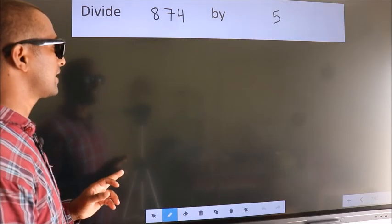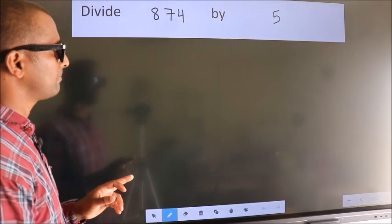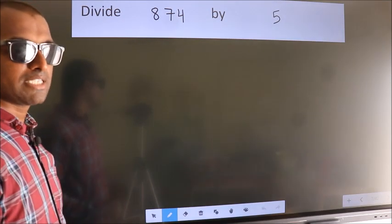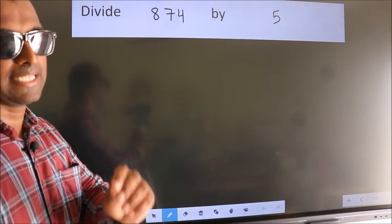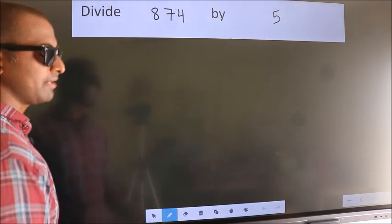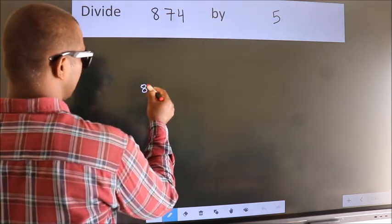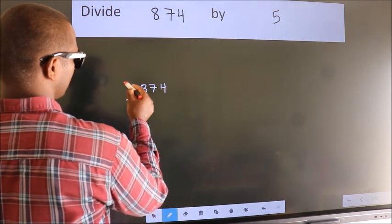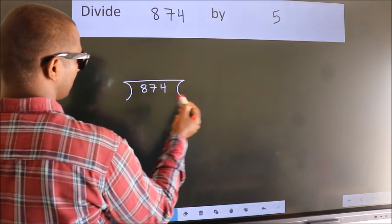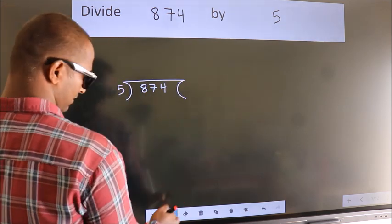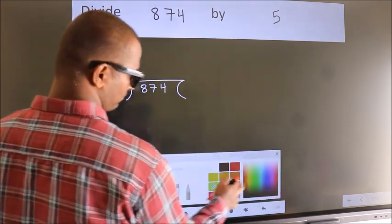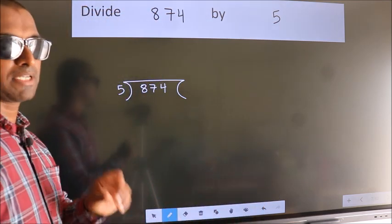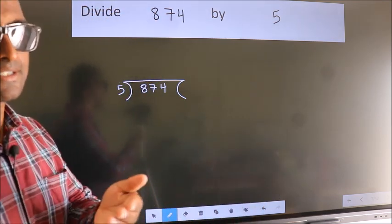Divide 874 by 5. To do this division, we should frame it in this way: 874 here, 5 here. This is your step 1.